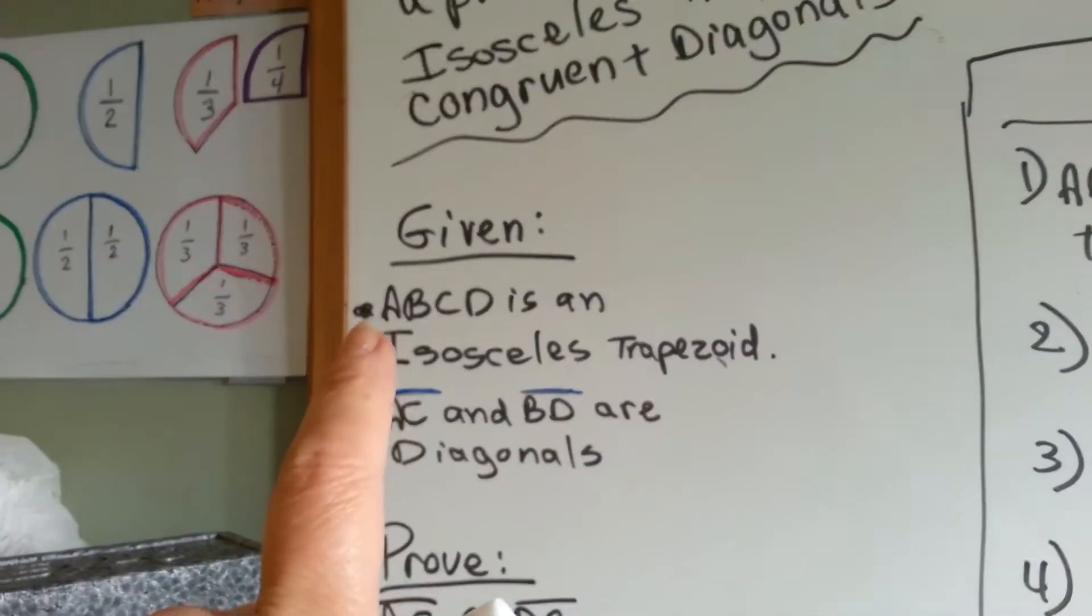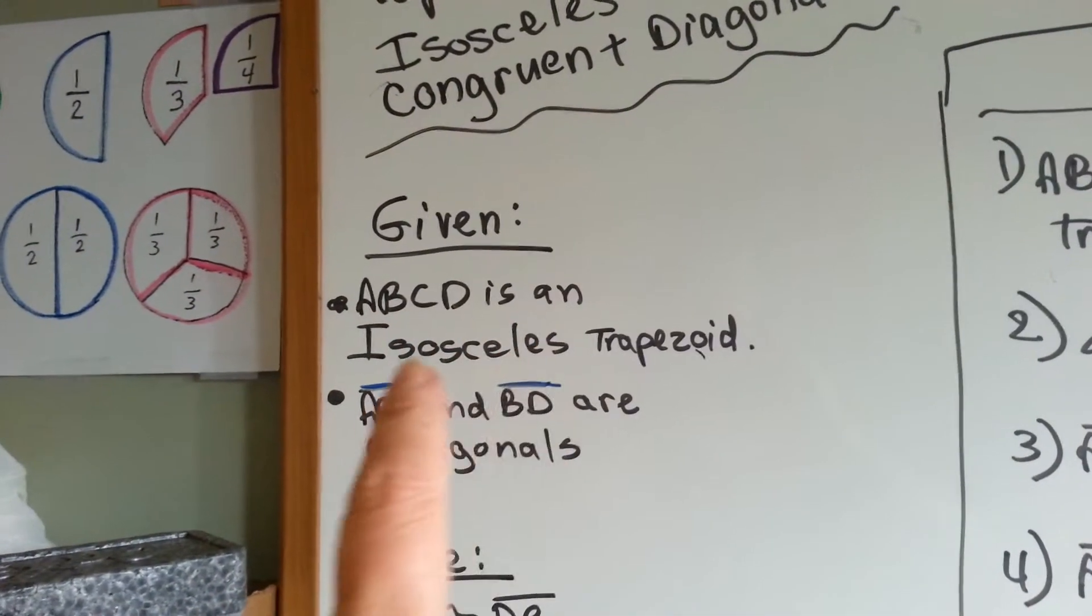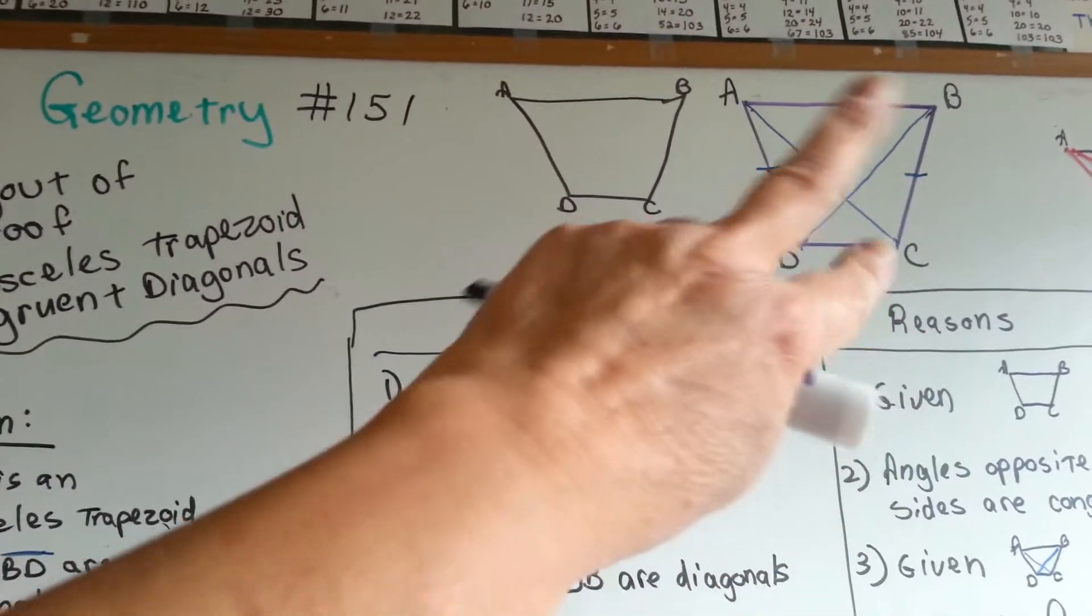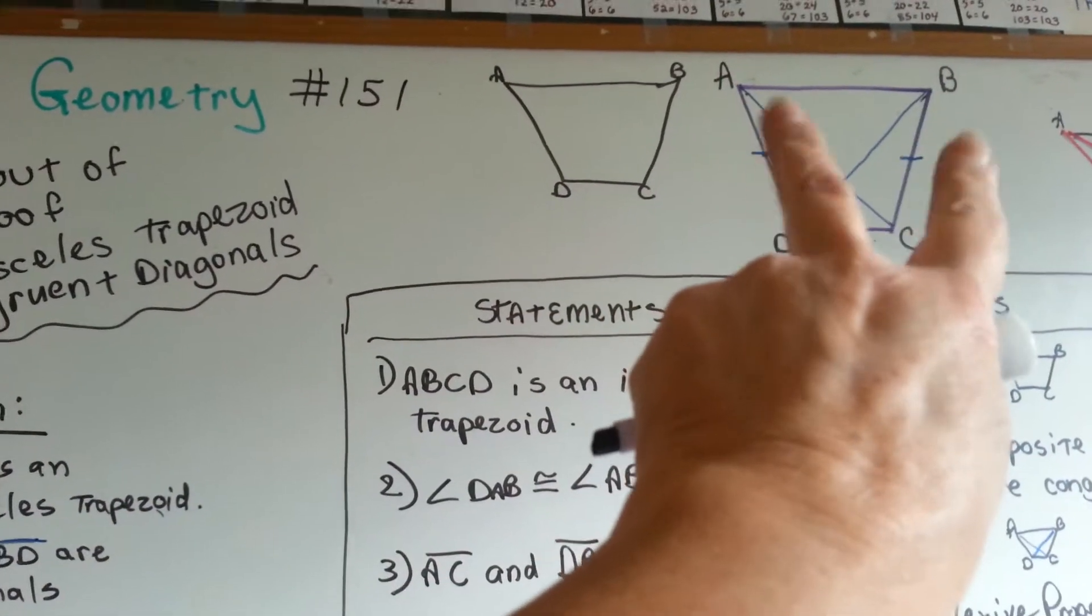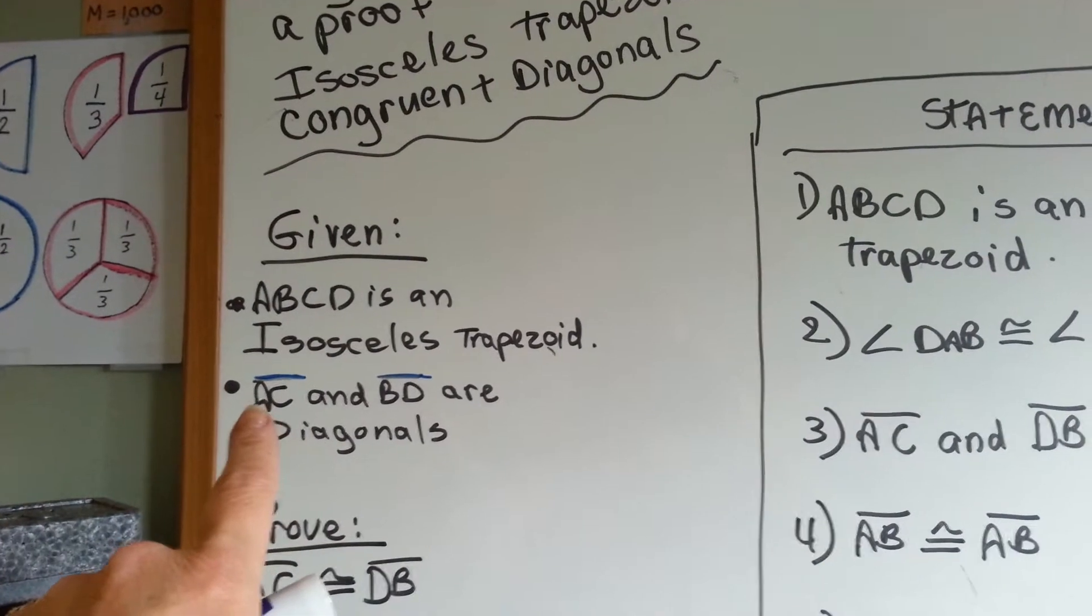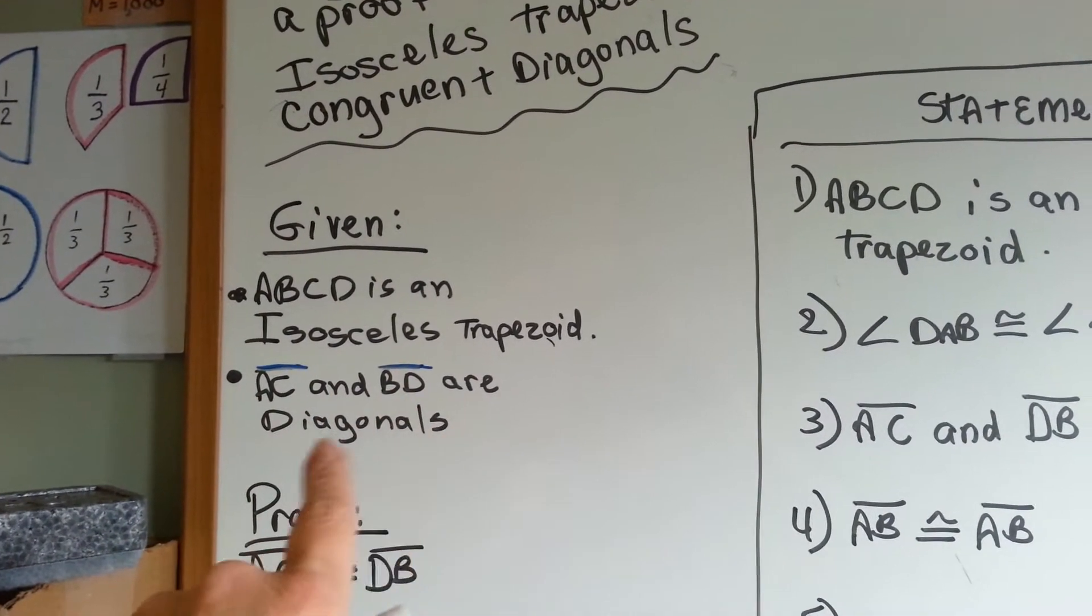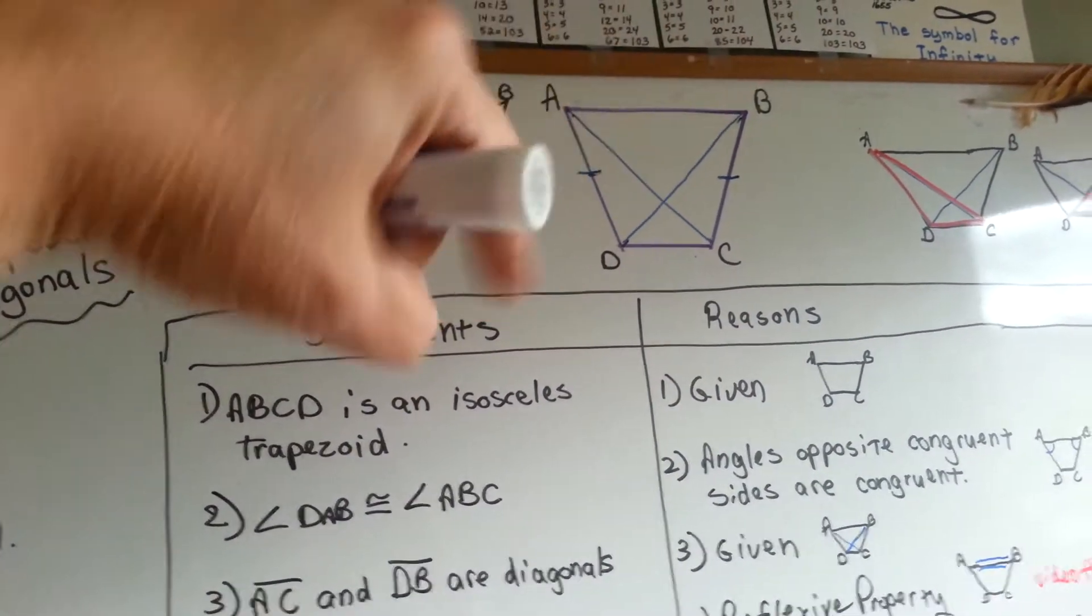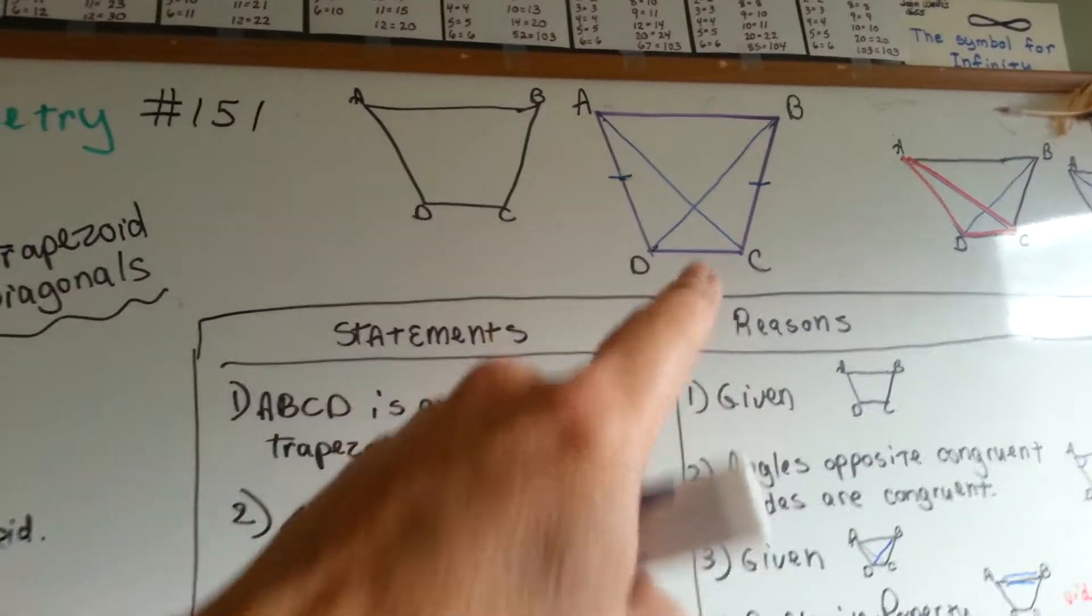Here's our given. ABCD is an isosceles trapezoid. I've got it wide on top and narrow on the bottom, but these are parallel, these are congruent. That's the given. Lines AC and BD are diagonals. These blue X's in the middle.